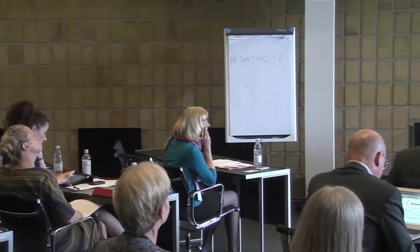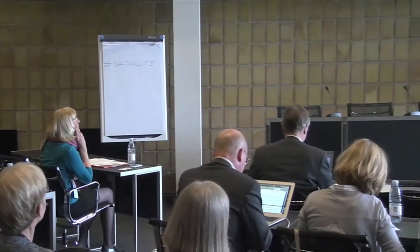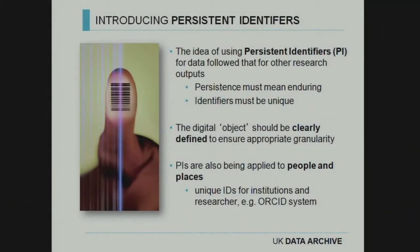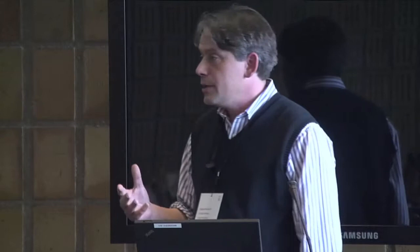The other area we've had to think about a lot is that the digital object being cited needs to be clearly defined in order to ensure the appropriate granularity of the object identifier given to it. And as we heard this morning, this is not just about citing data or research outputs — persistent identifiers can be used to identify individuals, researchers, taxonomies, and all sorts of other things as well.